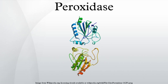Peroxidases are a large family of enzymes that typically catalyse a reaction of the form. For many of these enzymes, the optimal substrate is hydrogen peroxide, but others are more active with organic hydroperoxides such as lipid peroxides. Peroxidases can contain a heme cofactor in their active sites, or alternately redox-active cysteine or selenocysteine residues.